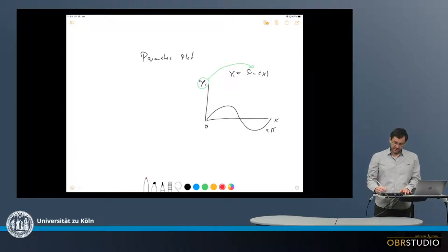In the parametric plot, the x-axis is not displayed, which means the x-value, which changes from 0 to 2π, for example, is not shown. However, there is a second function we have, y2, for example, cosine of x.